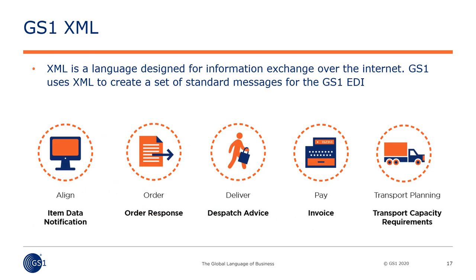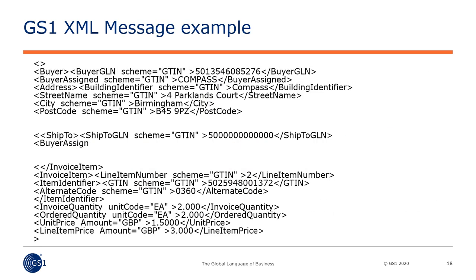Much like EANCOM, GS1 XML serves the same purpose, although it is more widely used in other areas such as web pages. Below are some of the common message types, which are not much different from EANCOM. The intended result is the same, but the language is very different. In this example of an XML message, you can easily identify what each line is trying to describe. You will always have an open tag at the start of a line, the detail or content, followed by the closing of the tag, which tells the machine to move on to the next line. EANCOM typically uses an apostrophe at the end of the line instead.